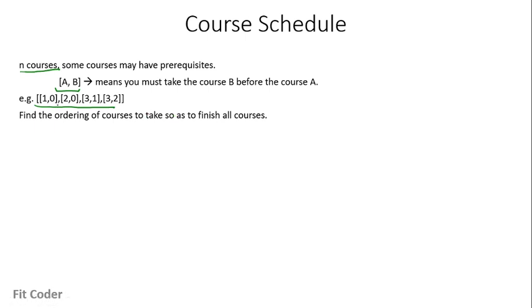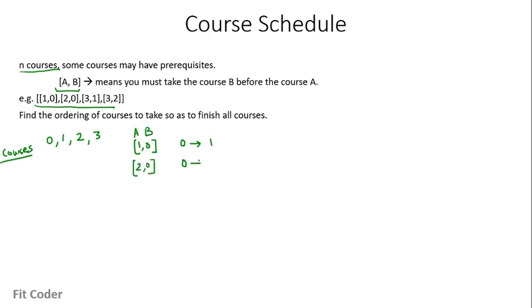In this example we have four courses 0, 1, 2 and 3. For the first dataset, course B should be taken before course A. If we plot this in the graph, there is a directed edge from vertex 0 to vertex 1. For 2, 0 it is a directed edge from course 0 to course 2. For 3, 1 a directed edge from 1 to 3, and for 3 to 2 a directed edge from 2 to 3.